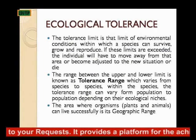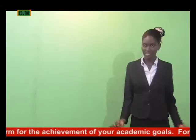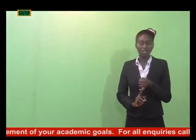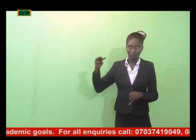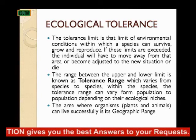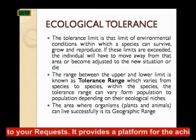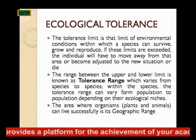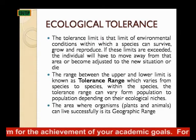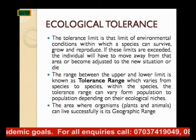If these limits are exceeded, the individual may have to move away from that area, become adjusted to the new situation, or die. If it has exceeded its tolerance limit, it either emigrates from that place, adjusts itself further to adapt, or it dies. The range between the upper and lower tolerance limits is called the tolerance range. It varies from species to species, and even within species it can vary from population to population depending on their ecological niches. The area where organisms can live successfully is called the geographic range.